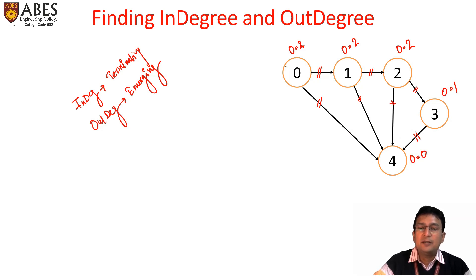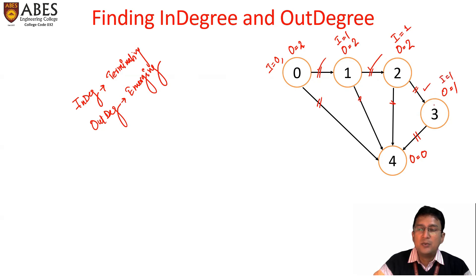Similarly, finding the indegree: for vertex number zero, there is no edge terminating, so the indegree of vertex zero is zero. For vertex one, only one edge terminates, so indegree is one. For vertex two, only one edge terminates, so indegree is one. For vertex three, indegree is one. For vertex four, indegree is four, because there are four edges terminating at that vertex.